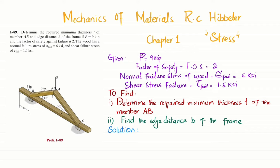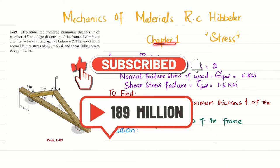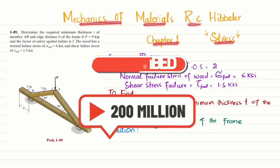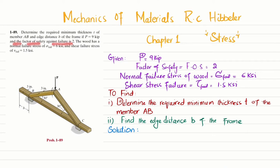Welcome back. In this video we are going to solve problem 1-89 taken from chapter number 1, Stress, from the book Mechanics of Materials by R.C. Hibbeler. The statement is: determine the required minimum thickness T of member AB and edge distance B of the frame if P is 9 kips and the factor of safety against failure is 2. The wood has a normal failure stress of 6 ksi and shear failure stress of 1.5 ksi.